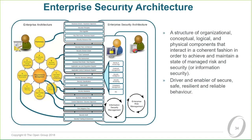The guide includes something called the Enterprise Security Architecture, defined as a structure of organizational, conceptual, logical, and physical components that interact in a coherent manner in order to achieve and maintain a state of managed risk and information security. It is a driver of the right kind of behavior. There are two components: information security management and enterprise risk management — two aspects of the same thing — and both have an impact on how you deploy the ADM. The document itself goes into a lot of detail about how you can make the TOGAF ADM secure and manage risk.